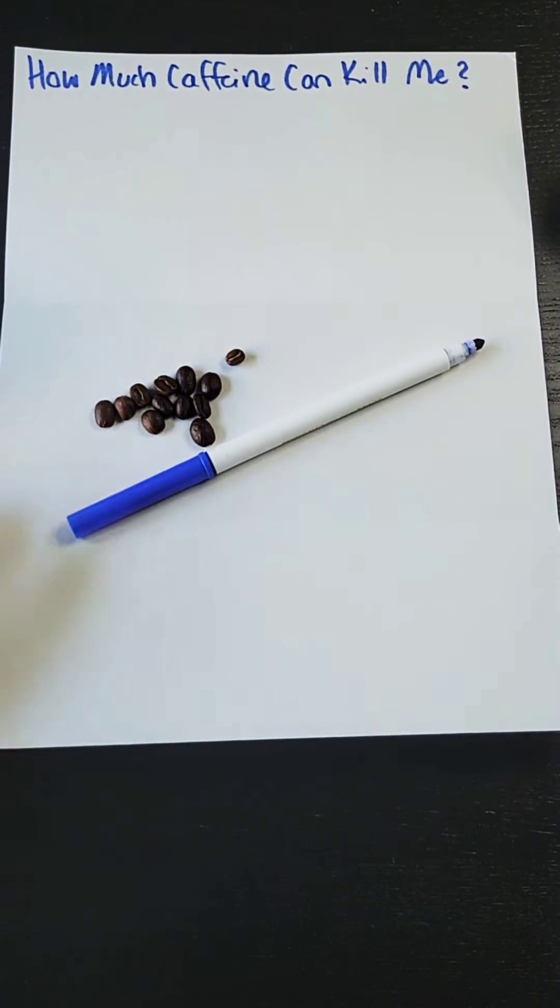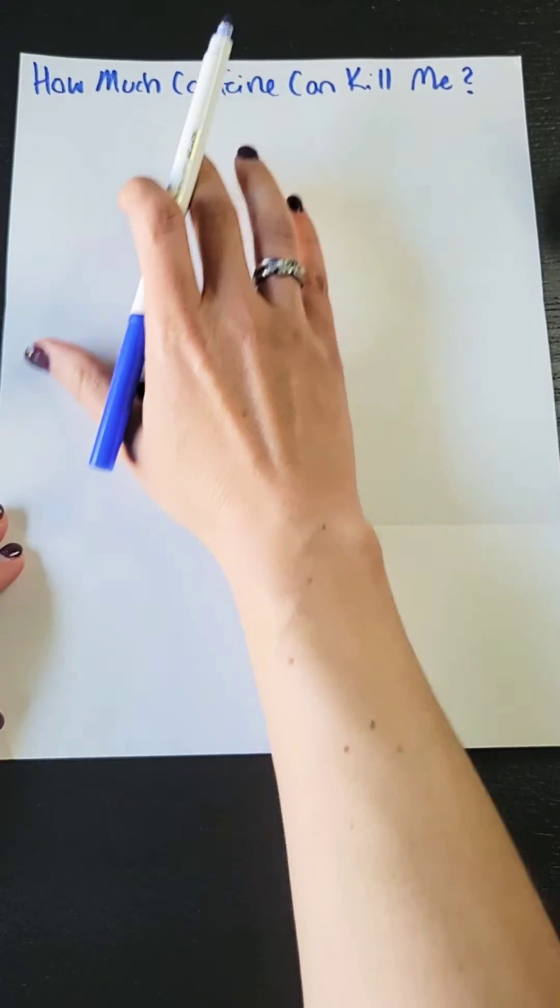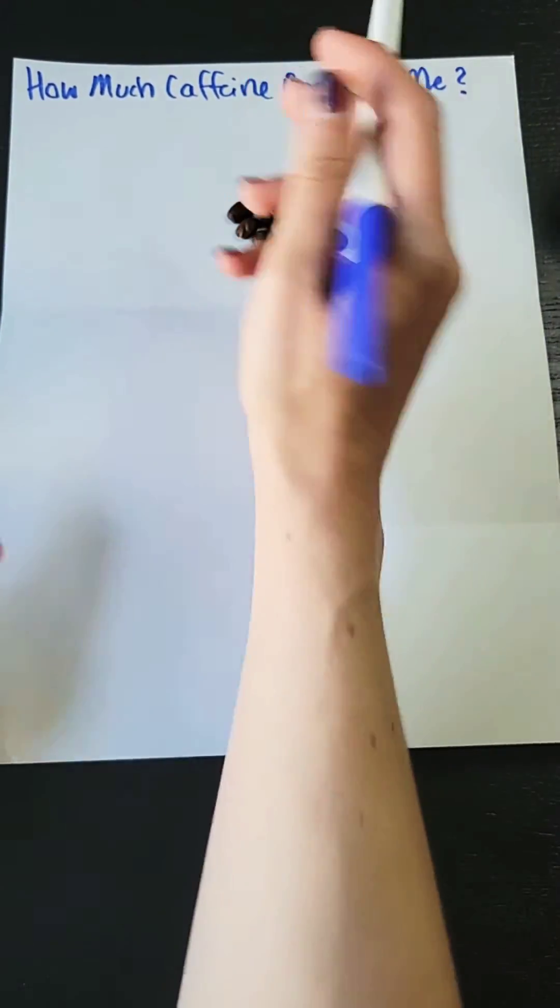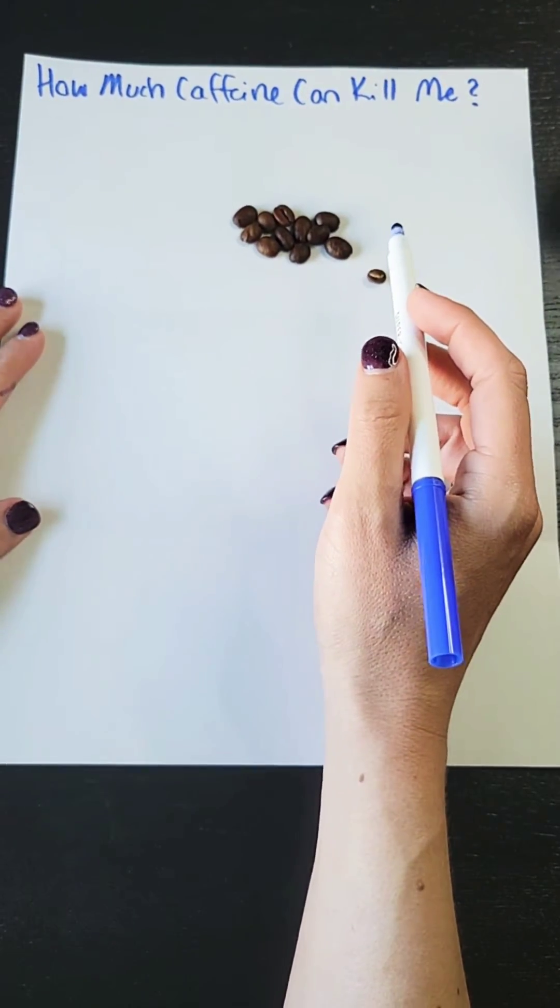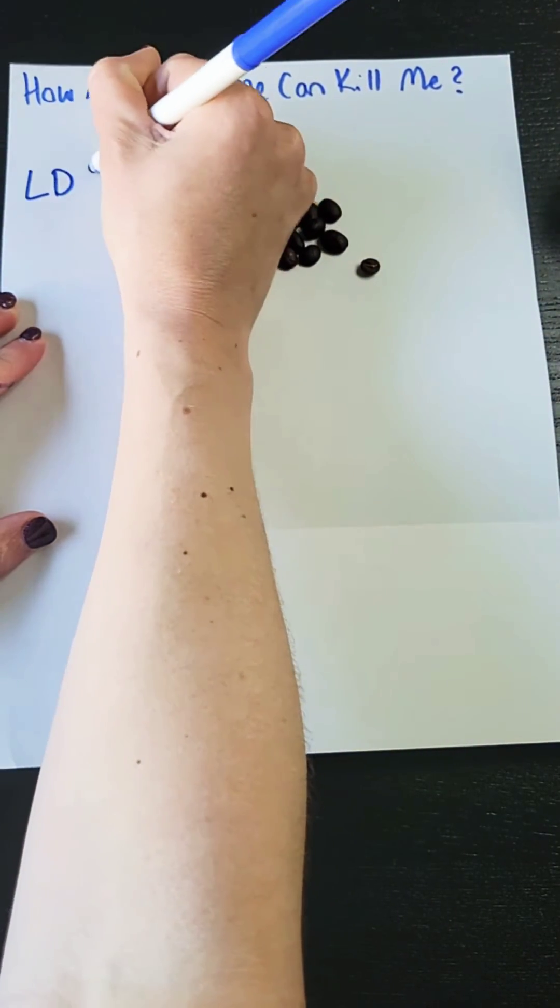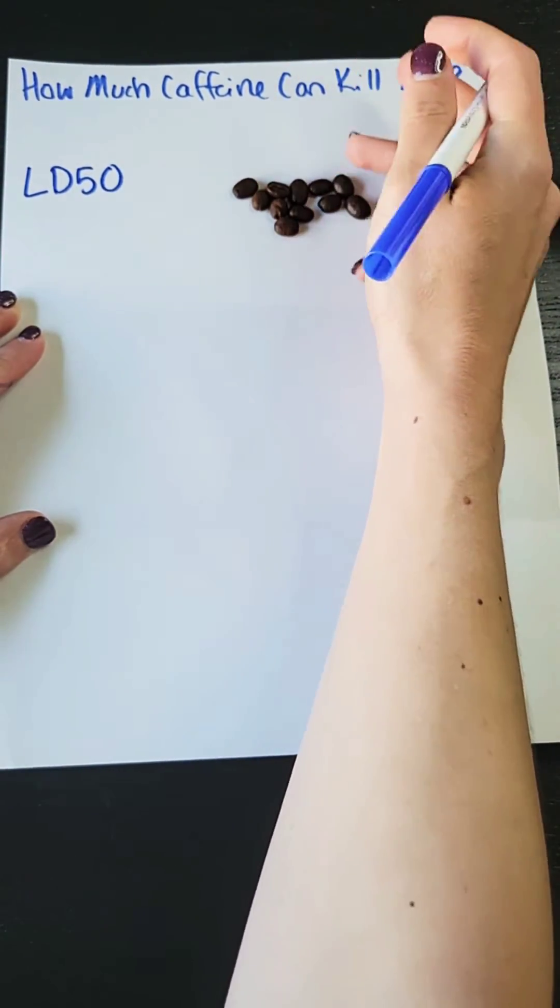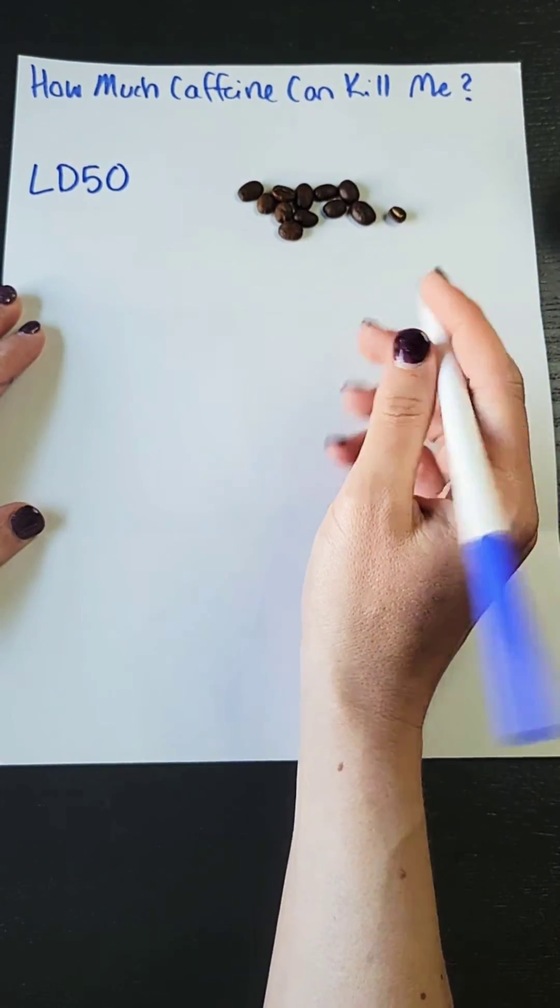Let's talk about caffeine killing people. First question, what exactly does that mean? Really, in order to understand this question and how we can even approach it, we need to talk about something called the LD50, which is essentially the dosage that is lethal for 50% of the population.